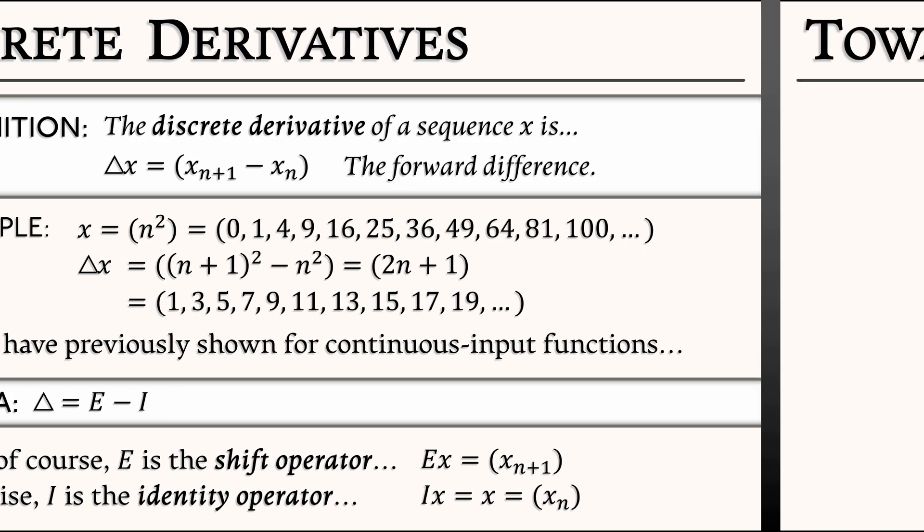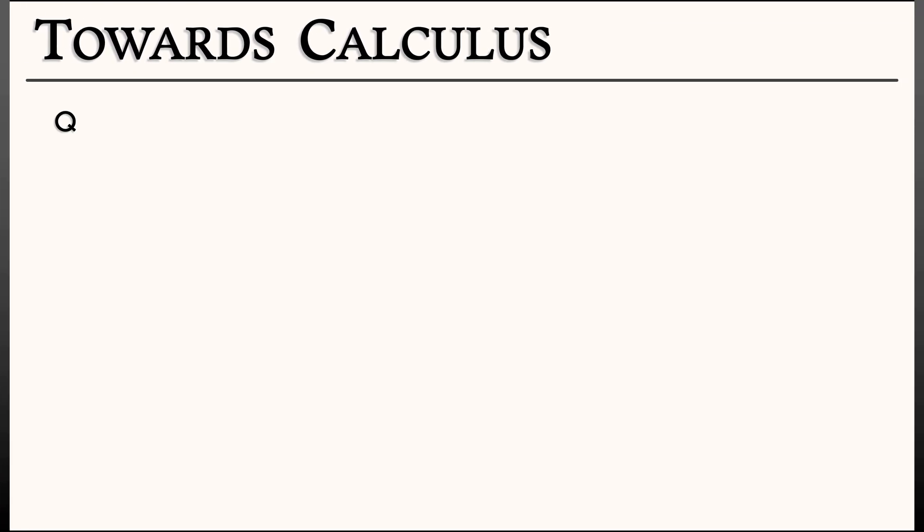We've done derivatives. Question, what's an integral? Well, like we did in standard calculus class, there are two types of integrals, the indefinite and the definite. The indefinite integral would be given by anti-differentiating, or in this case, anti-differencing. Let's consider the inverse of the forward difference operator delta.